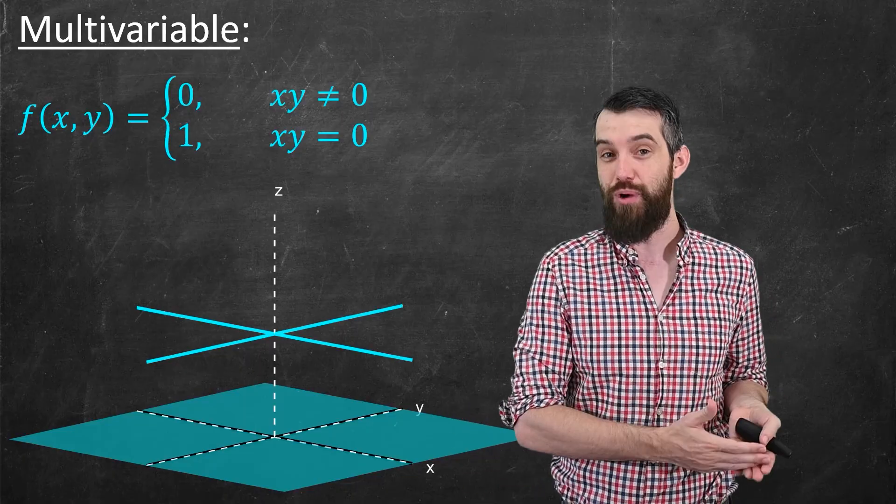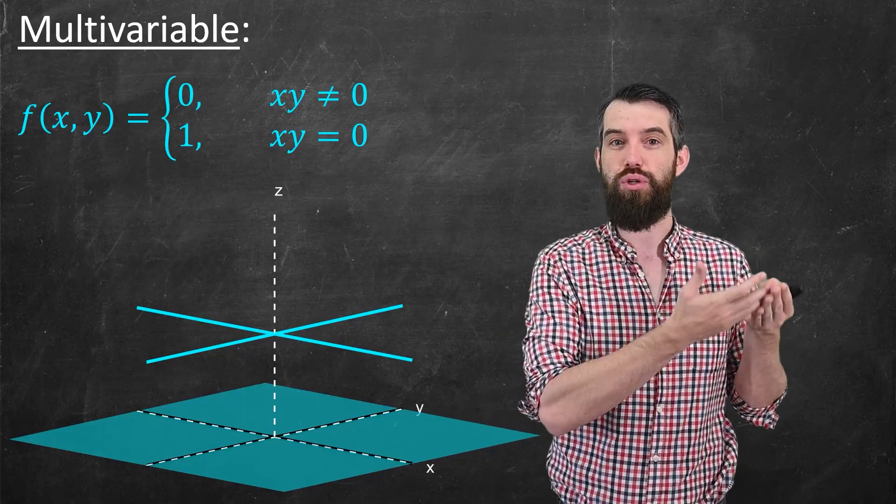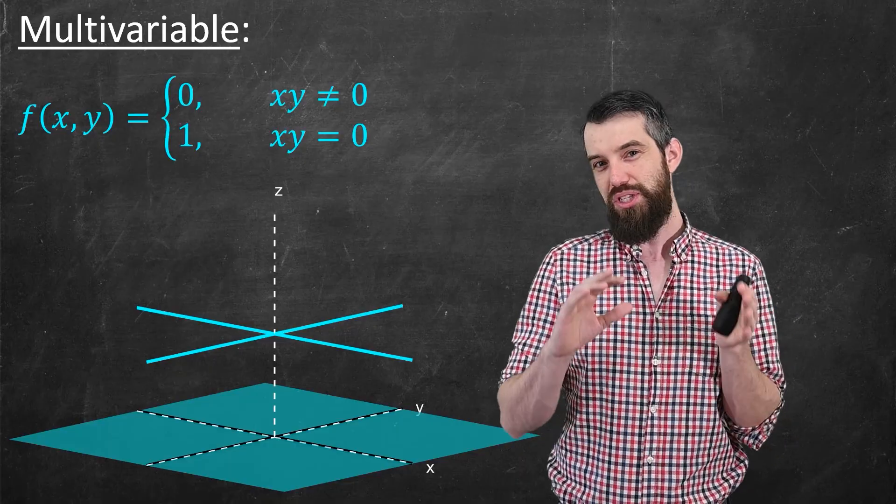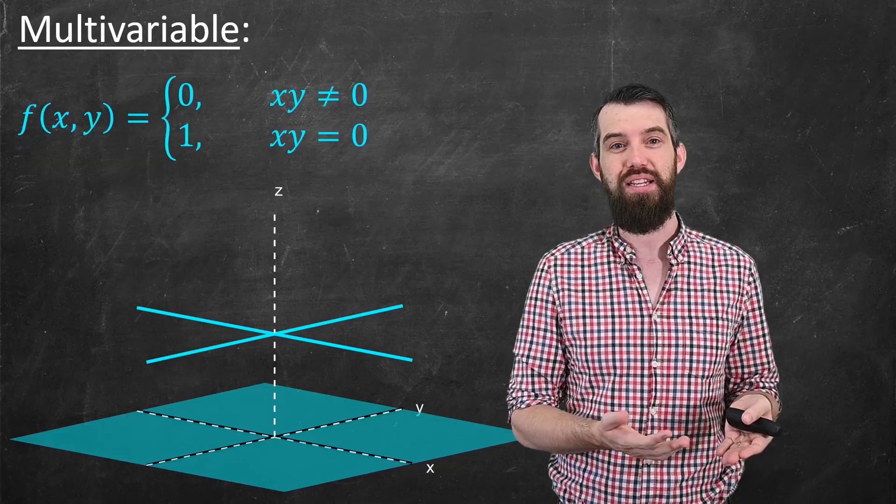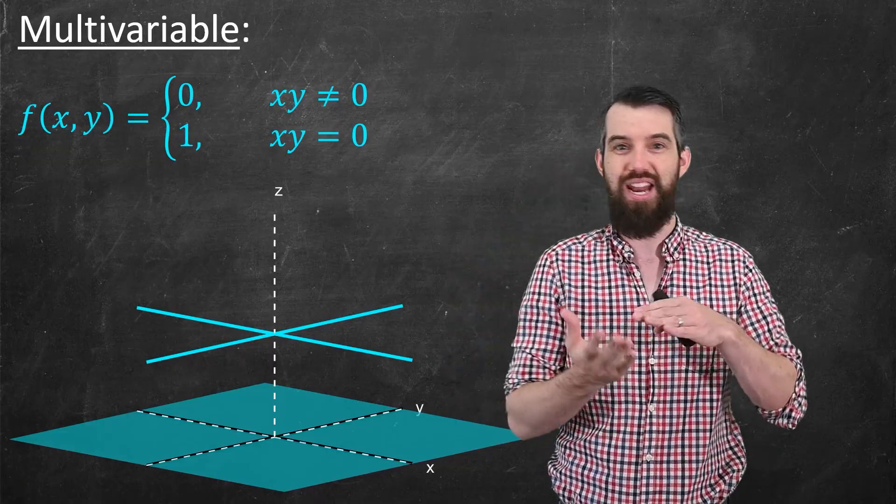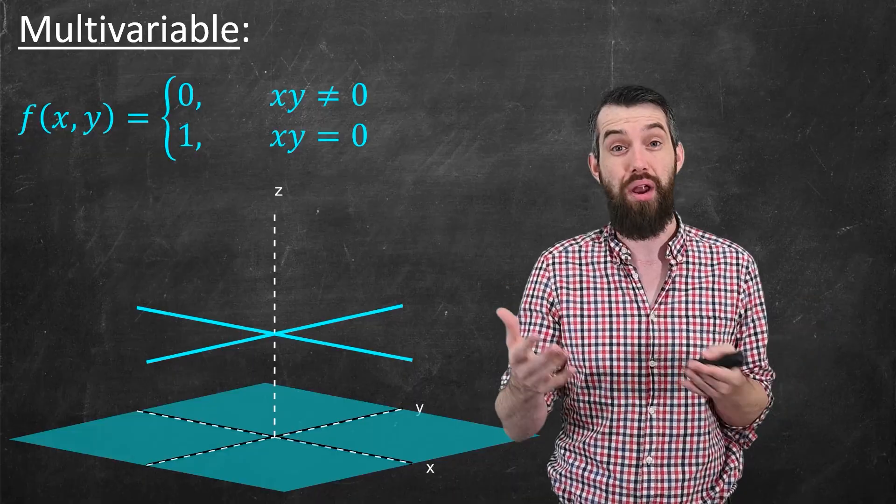So let's try to answer the same questions. Is this function continuous? And does it have partial derivatives? Now, just looking at the function makes it appear that it's not continuous. Indeed, it's going from 0 and then it jumps right up to 1. And that kind of jump we think of as something being not continuous.